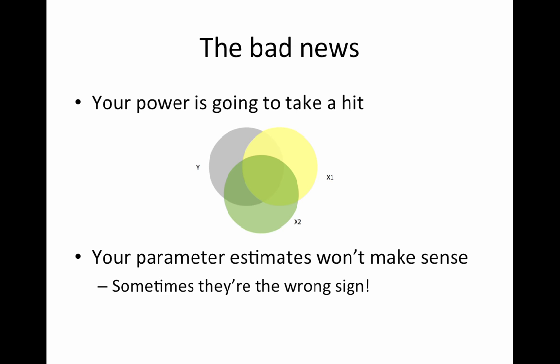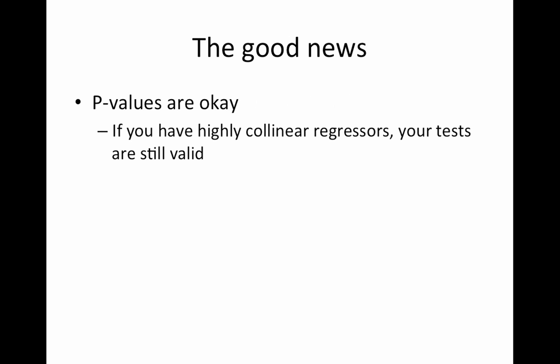The bad news is your parameter estimates won't make sense. Sometimes they can even be the wrong sign. If the collinearity is occurring in the model that you're actually studying right now, so let's say you have collinear regressors in your group model, age and reaction time could be highly collinear in your model. In that case you have to worry about your age and reaction time specific parameter estimates in that model because if the collinearity is bad enough your estimates will be wobbly and the effect sizes might be the wrong sign.